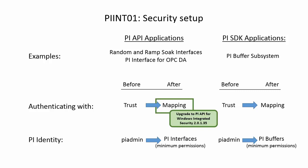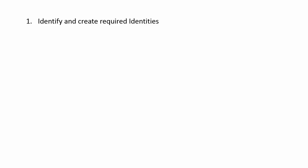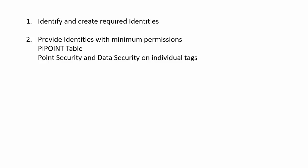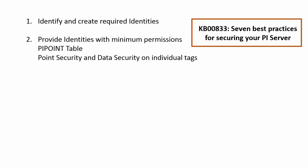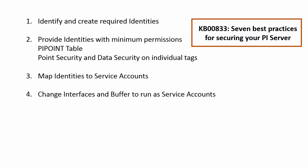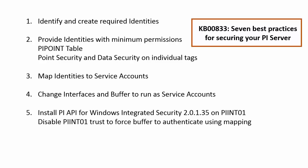Let's take a look at the steps we will use to complete this. First, we will determine what identities we need to create and provide these identities with minimum permissions on the PI Data Archive, including the PI Point table, point security, and data security on individual tags, using KB 7 best practices for securing your PI Server. We will map the identities to service accounts, change the interfaces and buffer to run as service accounts, install the PI API for Windows Integrated Security on PIINT 01, disable the open trust used previously, and finally verify the interfaces, buffer connections, and data flow.